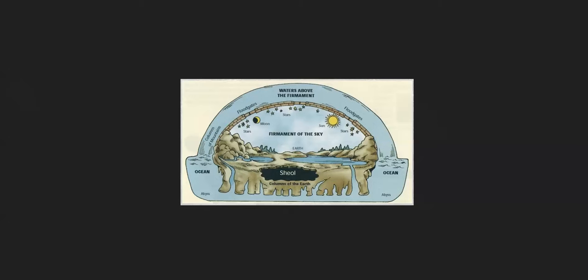The purpose of this video is to discuss a question about the flat earth theory. Those who aren't familiar: some people believe our planet is not a sphere but a flat plane with a dome-like structure above it called the firmament, which has water above it — similar to what's being shown in this picture on screen. I think the term firmament came from the Bible.